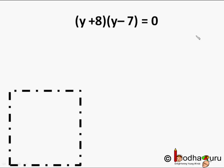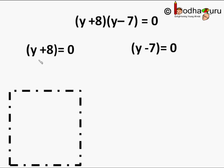For this polynomial to be 0, either (y + 8) has to be 0 or (y - 7) has to be 0. If either of them is 0, the product would be 0.